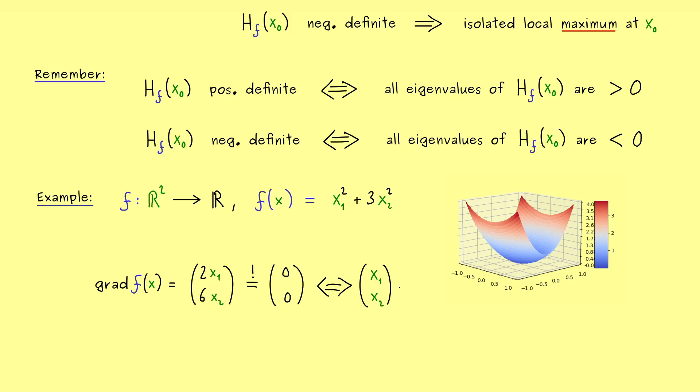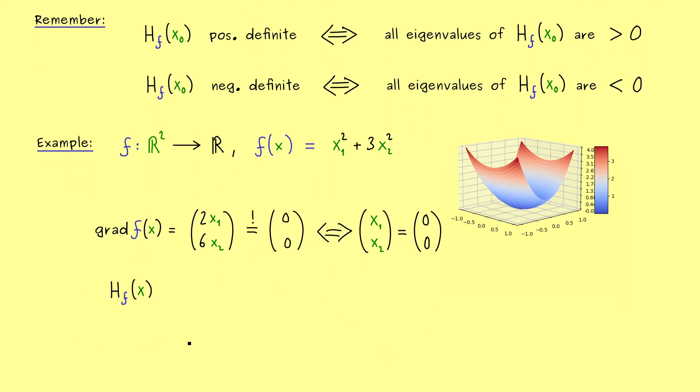Hence in the first component we have 2x₁ and in the second component 6x₂. So first the partial derivative with respect to x₁ and then with respect to x₂. And now for finding the critical points we want that this is equal to the zero vector. We have two equations to solve and we immediately see this is only possible for the origin. So in summary the gradient of f is zero if and only if x₁ and x₂ are equal to zero as well. So we see there is only one critical point.